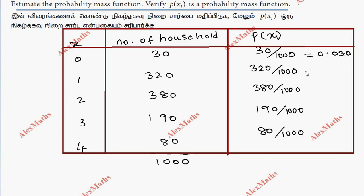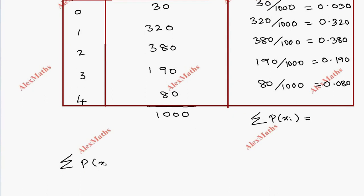If we have 30, we move 3 decimals. This is 0.320. This is 0.380. This is 0.190. This is 0.080.